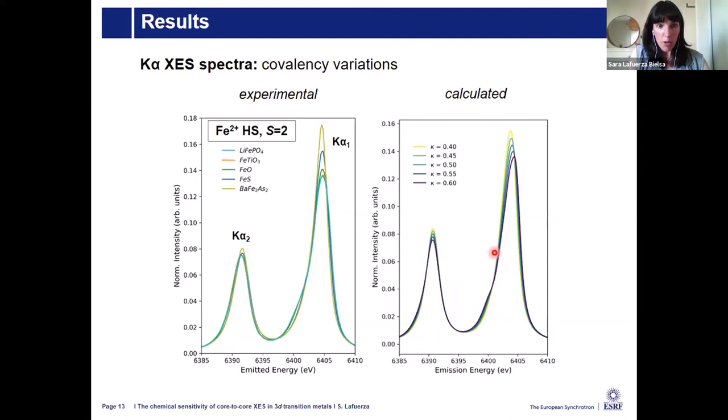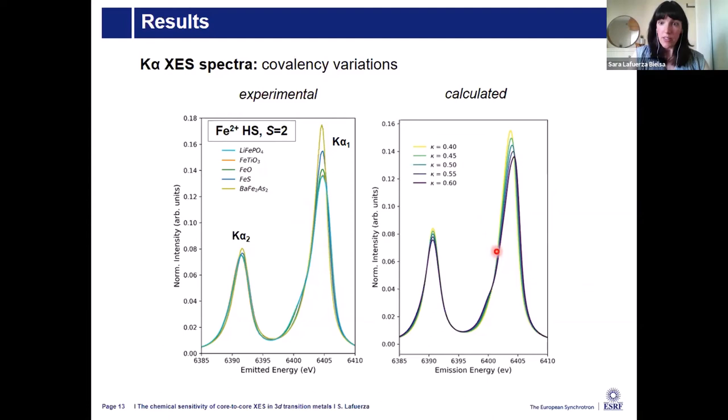For K-alpha spectra of the same compounds, covalency variations also manifest, though with less pronounced effect. They affect mainly the width and symmetry of the lines rather than the main splitting. Moving toward more covalent character produces narrower peaks. The calculations, by scaling the Slater integrals, capture this effect quite well.